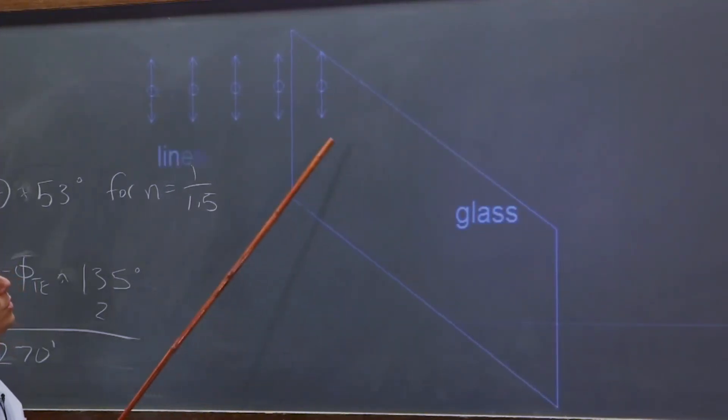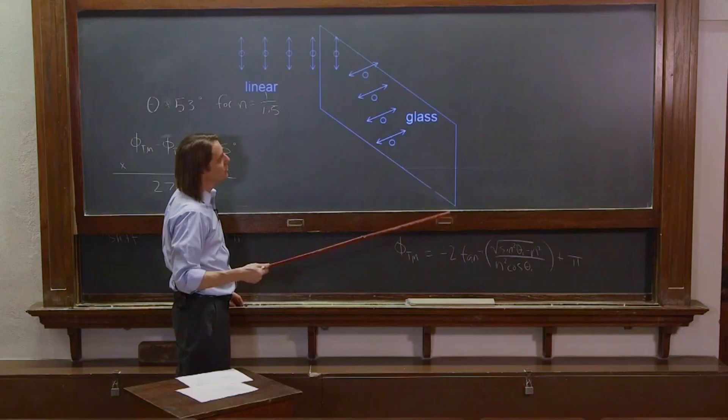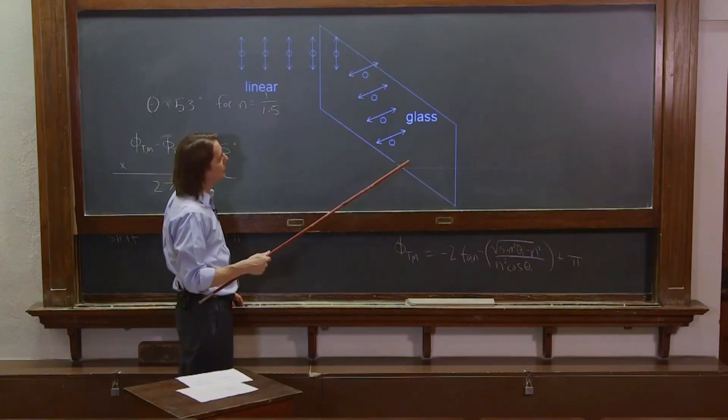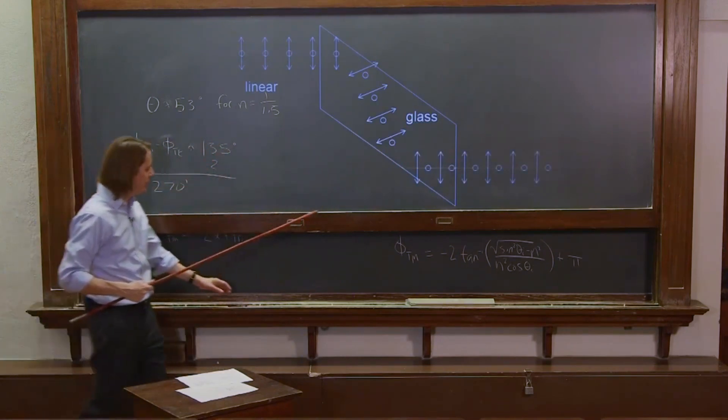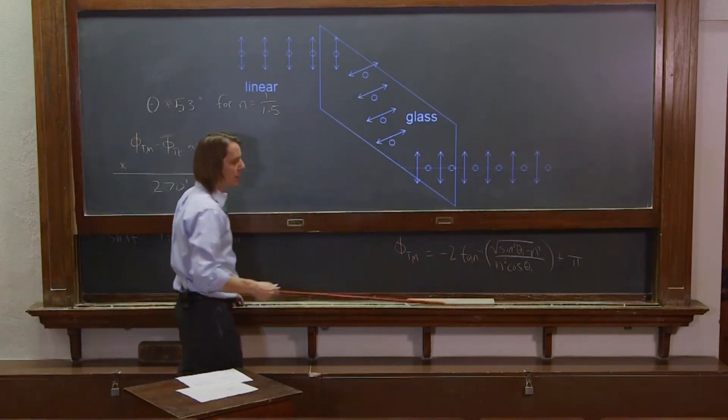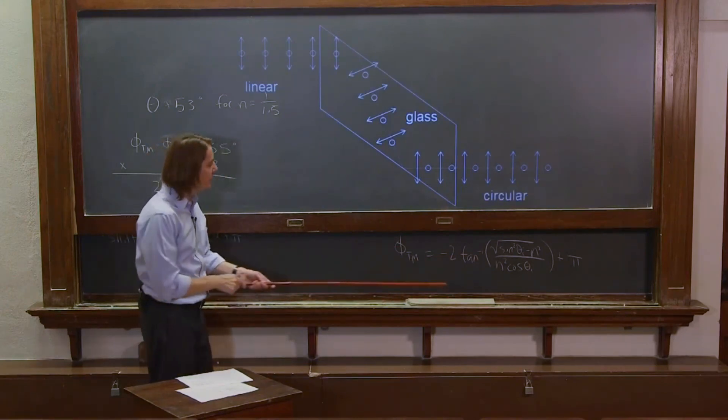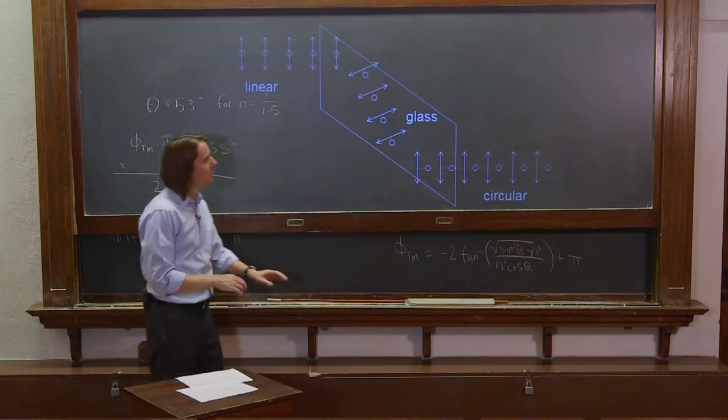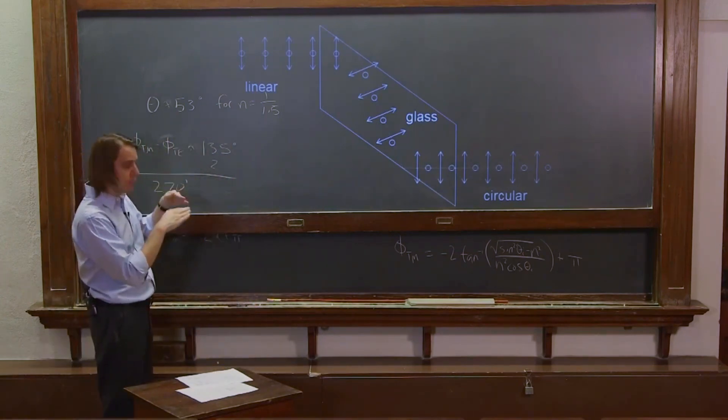53 degrees. So what that means is you get a shift of 135, right? So they're out of phase by about that much, right? About a half of pi over 2. And then they do another phase shift. And that gives them another 135. They end up out by 270, which is the same as being pi over 2 out of phase. So what comes out is circular. So you can actually manipulate polarization pretty much arbitrarily by making light go through internal reflections.